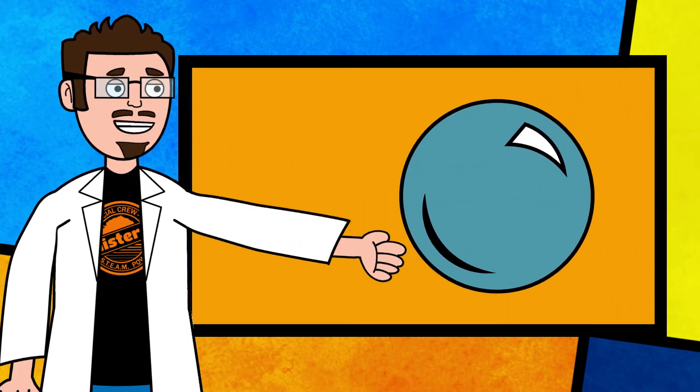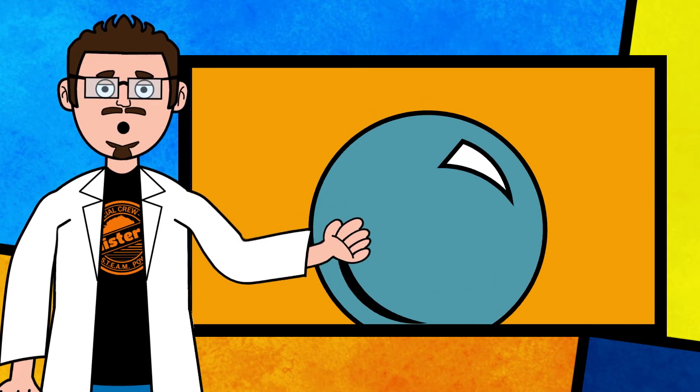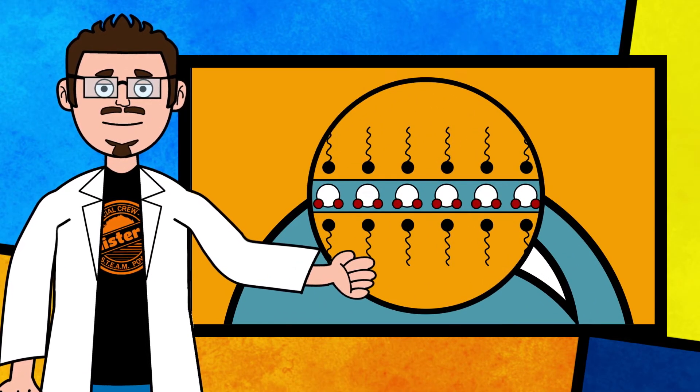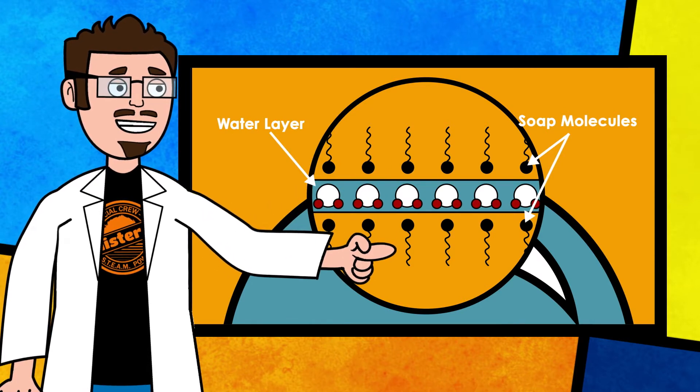When you blow air into the soapy solution, the air gets trapped inside and forms a bubble. The walls of a bubble are pretty cool and there are three layers: a soap layer, a water layer, and then another soap layer.